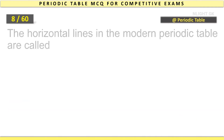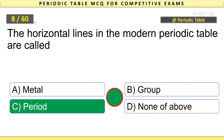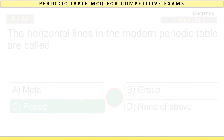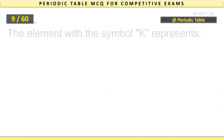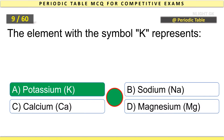The horizontal lines in the modern Periodic Table are called Period. The element with the symbol K represents Potassium.